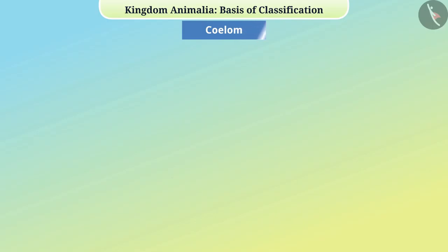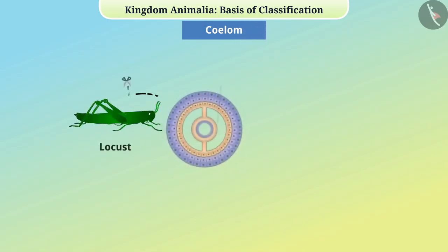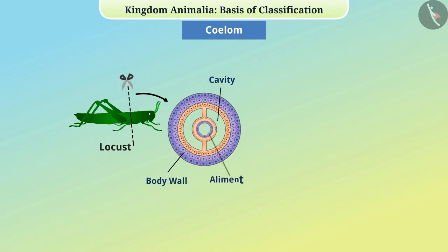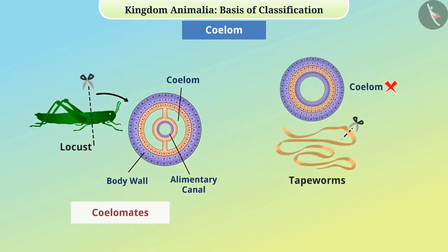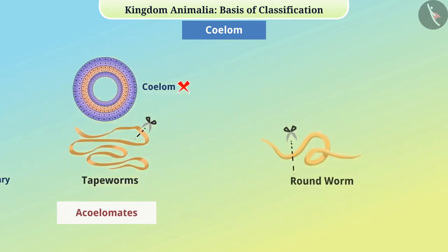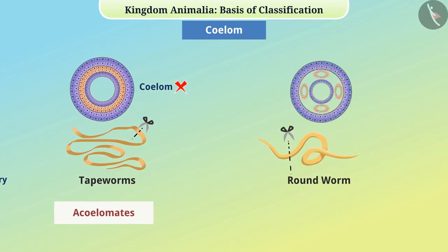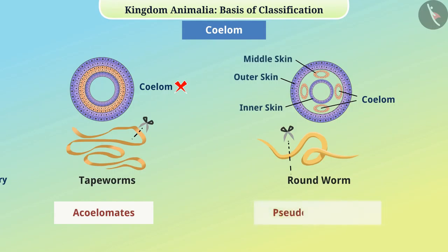Coelom: Some animals, such as locust, have a cavity between the body wall and the alimentary canal called coelom, and those which have coelom in the body are called coelomates. Some animals, such as tapeworms, do not have a body cavity — they are called acoelomates. In some animals, such as roundworms, the body cavity is in the form of a sac scattered between the middle skin and the outer skin — these animals are called pseudocoelomates.